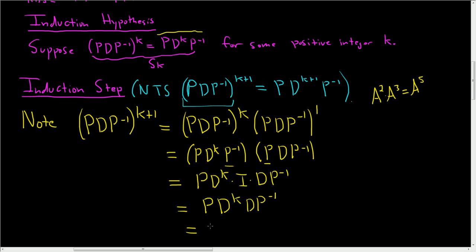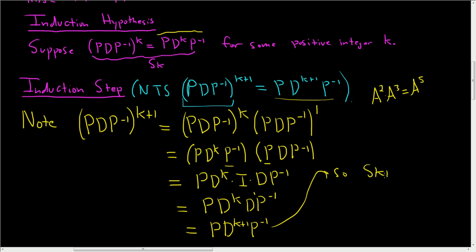Since D^k times I is just D^k, this simplifies to PD^k · D · P⁻¹. And since D^k times D is D^(k+1), we get PD^(k+1)P⁻¹, which is exactly the right-hand side. So S_(k+1) is true.